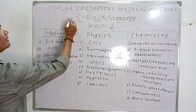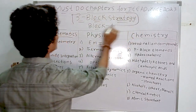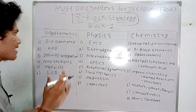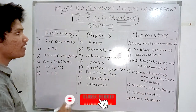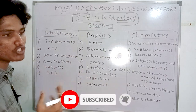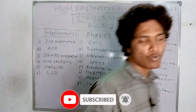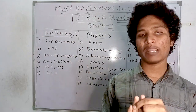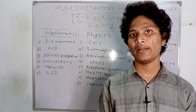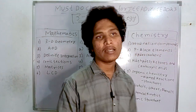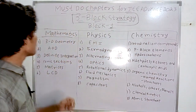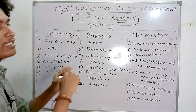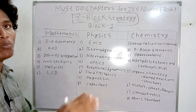This is basically the three-blocks strategy. Each block has some important chapters. Block one, block two, block three — for three blocks, the chapters are divided.